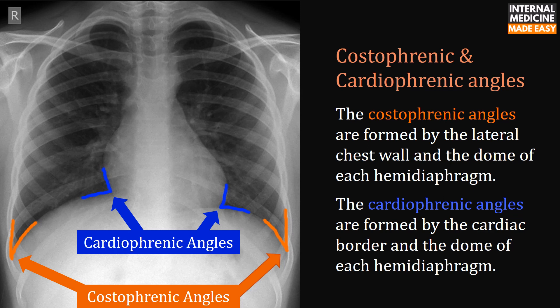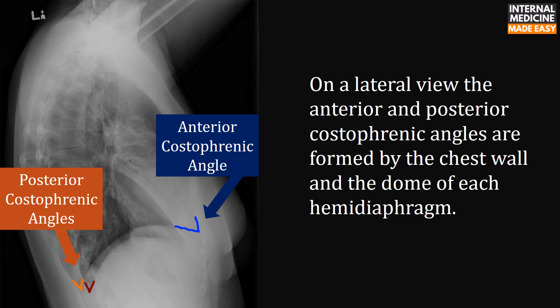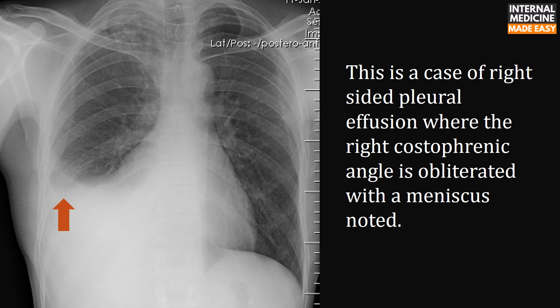The costophrenic angles are formed by the lateral chest wall and the dome of each hemidiaphragm. The cardiophrenic angles are formed by the cardiac border and the dome of each hemidiaphragm. On lateral view, the anterior and posterior costophrenic angles are formed by the chest wall and the dome of each hemidiaphragm. This is a case of right-sided pleural effusion where the right costophrenic angle is obliterated with a meniscus noted.